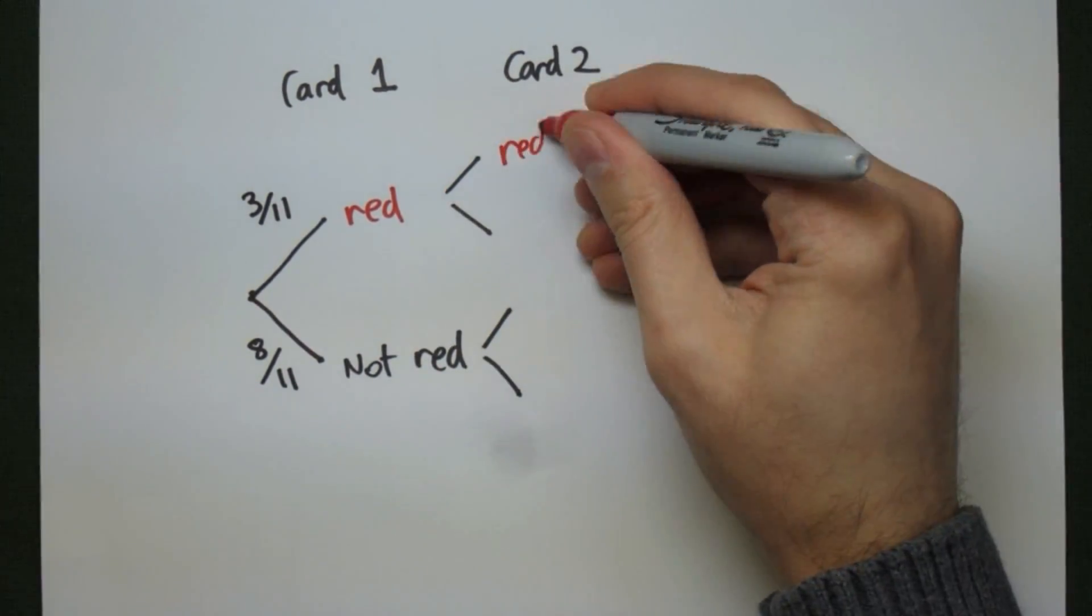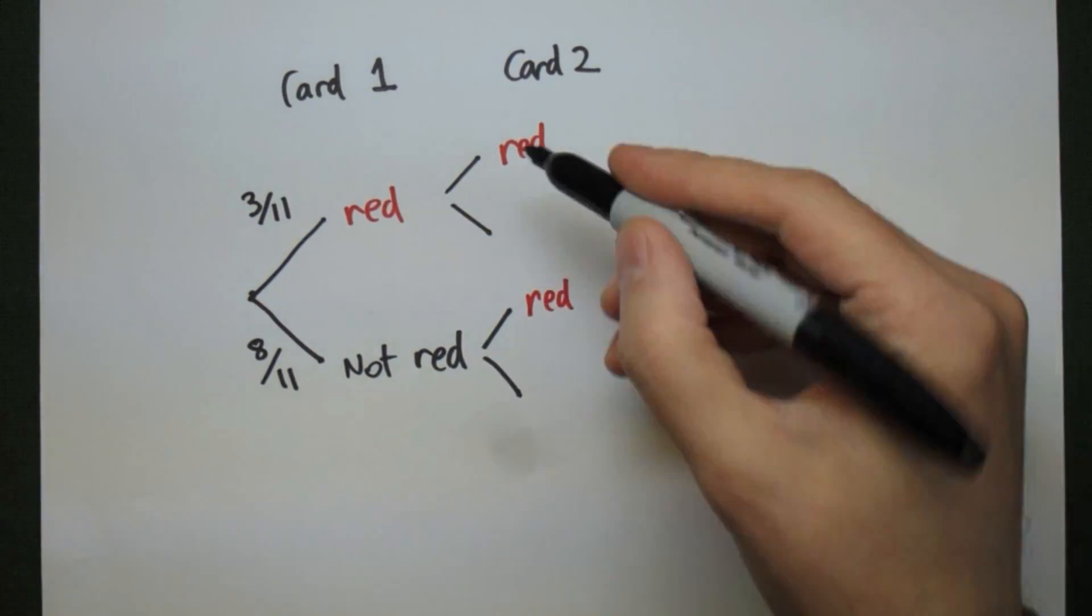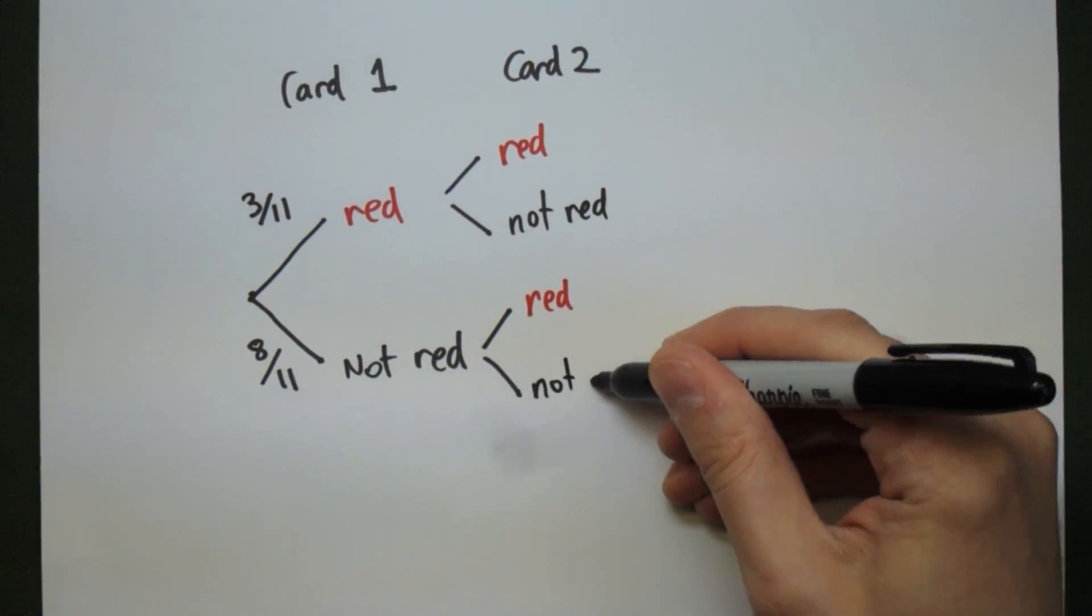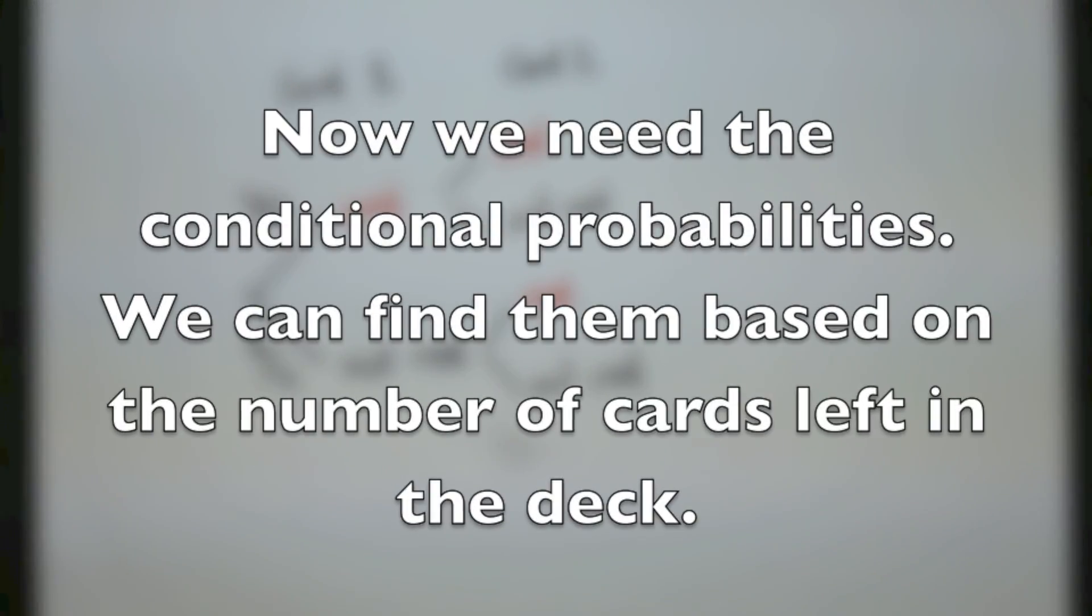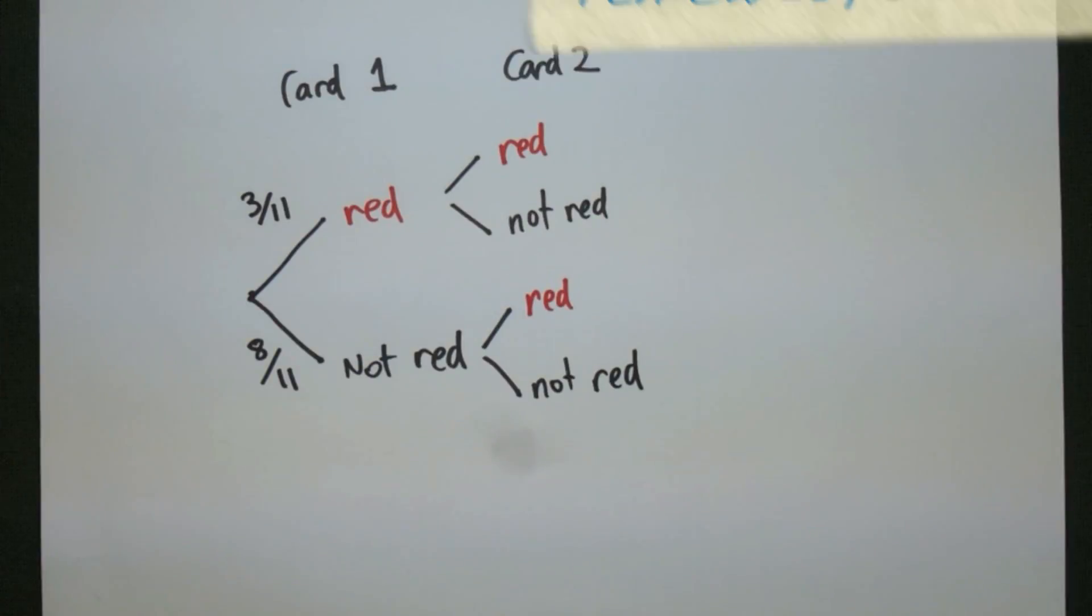Our second card now can either be red, or it could not be red. We get the same choices here. Each of these probabilities now will be conditional, though. We're going to find them based on the number of cards left in the deck.